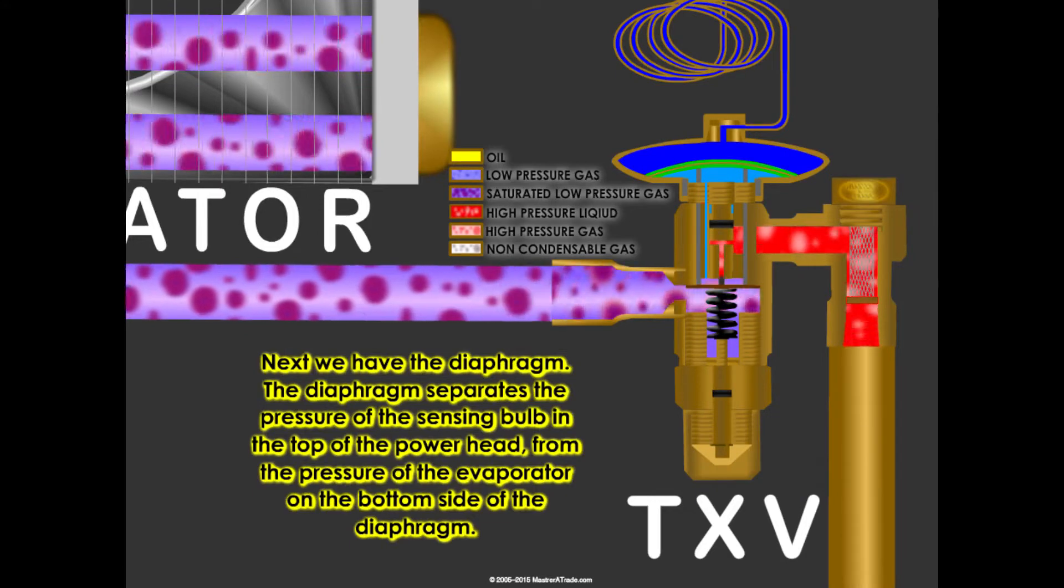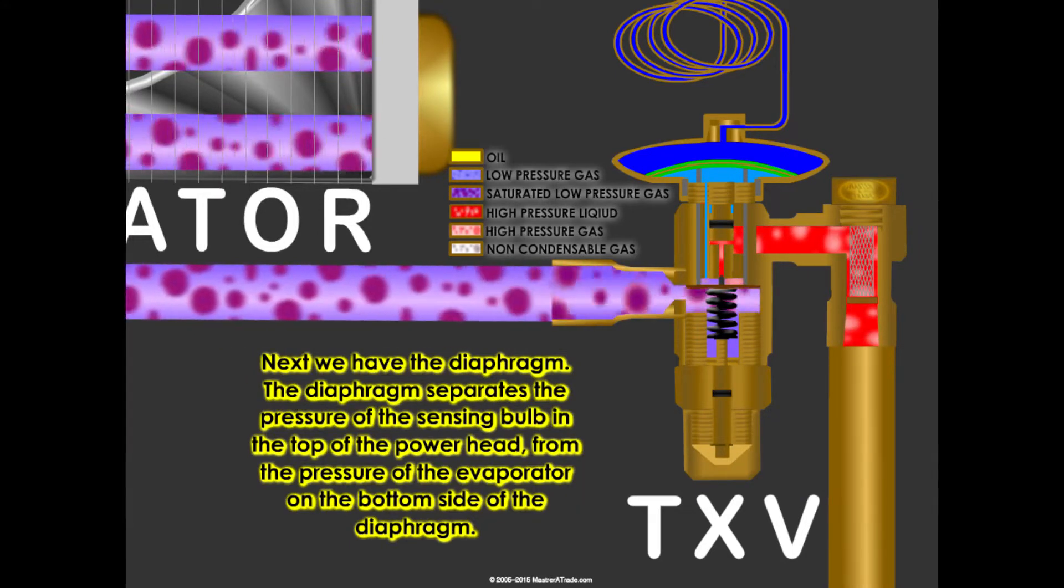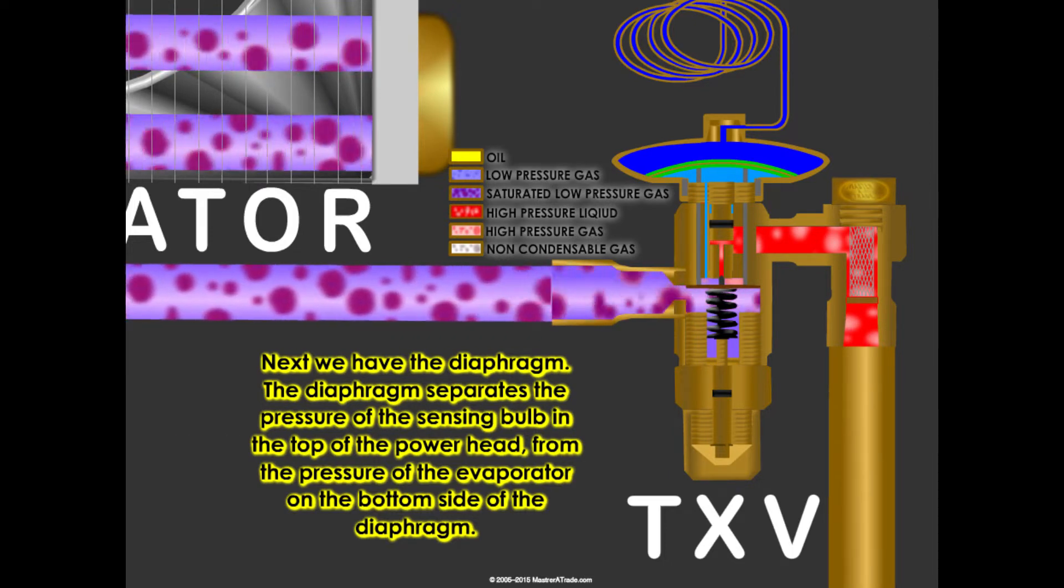Next, we have the diaphragm. The diaphragm separates the pressure of the sensing bulb in the top of the power head from the pressure of the evaporator on the bottom side of the diaphragm.